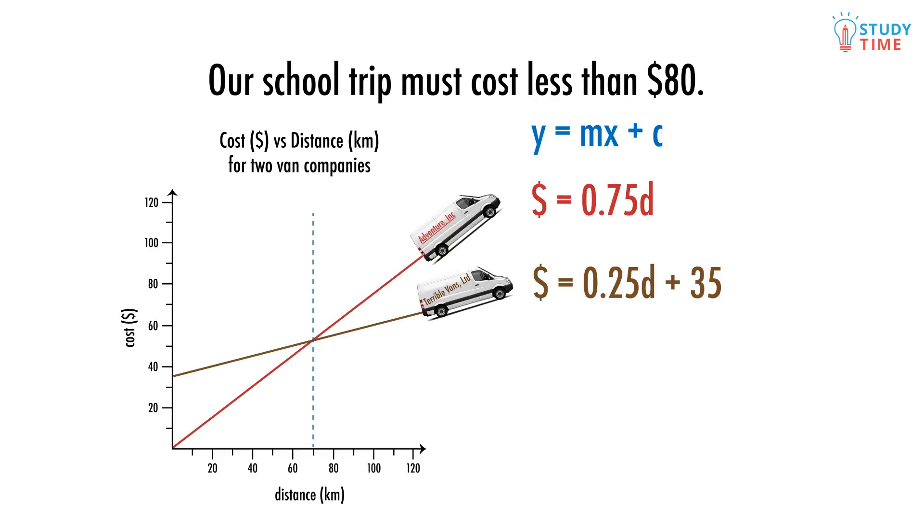When the two lines meet, we know that they are the same at this point. So how do we know which van we should take? Well, like a lot of things in the real world, it depends how far you're going. If our trip is 120 kilometres total there and back, which van will get us there under our budget of $80? The only one that can make the trip are the Terrible Vans. Be sure to wear a seatbelt.